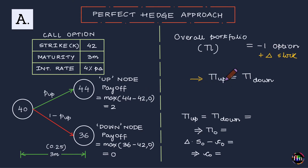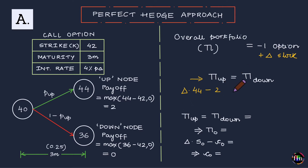Let's work out the value of the overall portfolio in the up node and in the down node. In the up node, delta units of the underlying stock are worth delta × 44, and the short call position contributes −2, giving pi_up = delta × 44 − 2. In the down node, pi_down = delta × 36 − 0. Setting pi_up equal to pi_down and solving: 8 × delta = 2, so delta = 2/8 = 0.25.